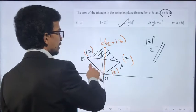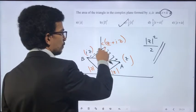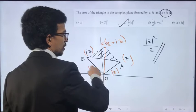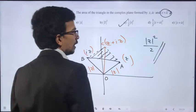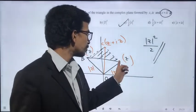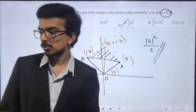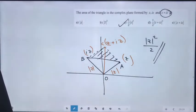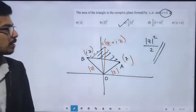z and iz are perpendicular vectors. Using the parallelogram rule, the area of the triangle is half the area of the square. So the answer is c, |z|²/2.